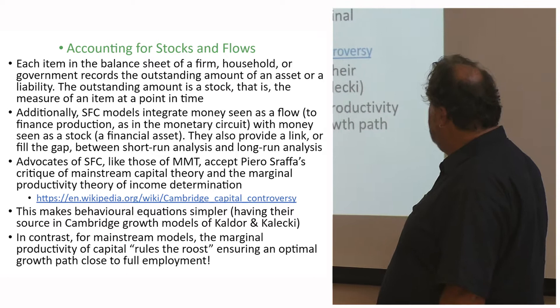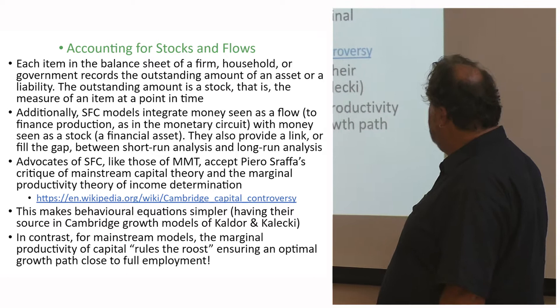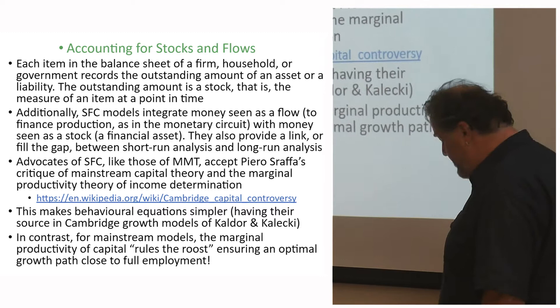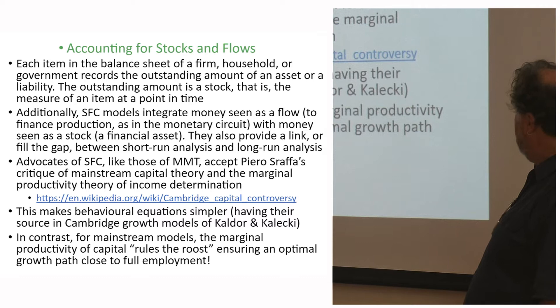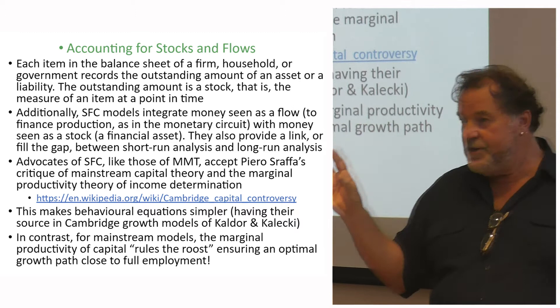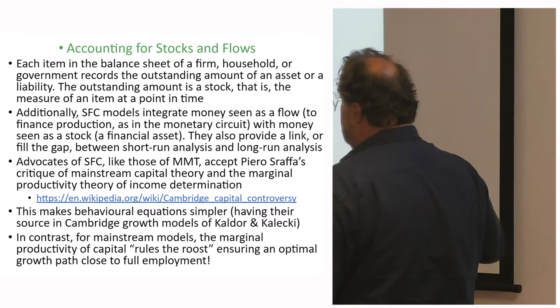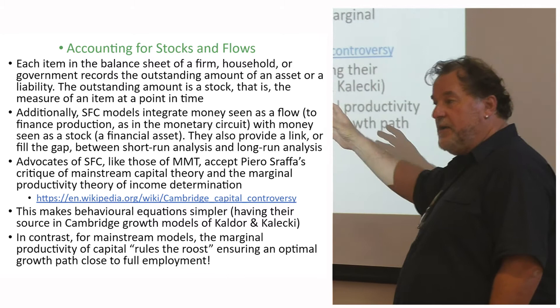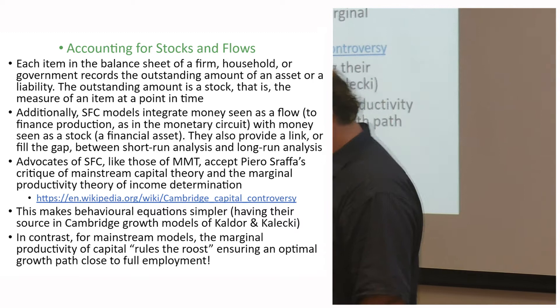Rejecting mainstream capital theory also makes behavioural equations simpler. They tend to have their source in the growth models that Kaldor and Kalecki were developing at Cambridge in the 1940s and 50s. In contrast, mainstream models rely on the marginal productivity of capital — it determines an optimal growth path close to full employment. We need the capital debates to undermine these conservative results.